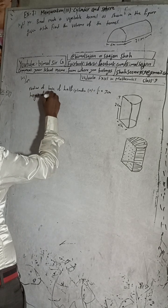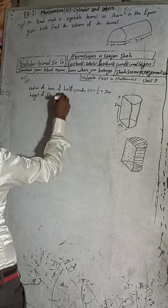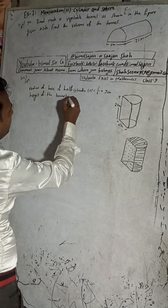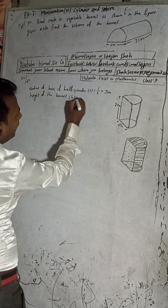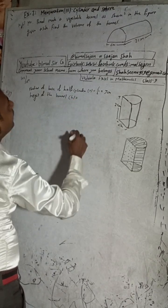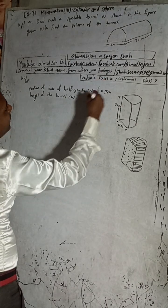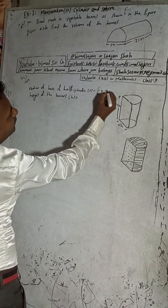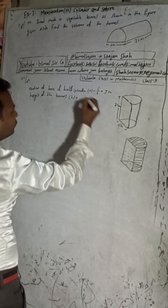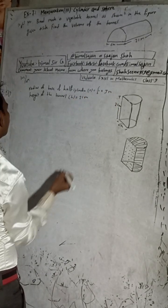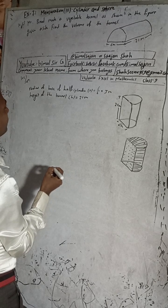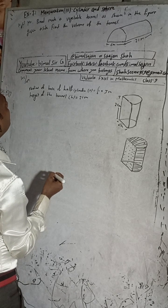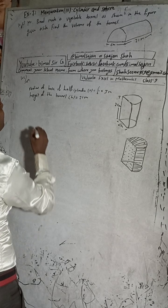This is of the tunnel or half cylinder. The tunnel length is equal to - here is given how much? 21 meter. This is meter, not cm. This is 21 meter. Now we need to find the volume of the tunnel.